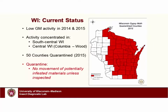What's the current status in the state? Gypsy moth activity has been pretty low the last two years in 2014–2015. This is a current quarantine map — most of the activity in the past few years has been in south-central Wisconsin, places like Walworth County, Rock County, and Dane County. There have also been a few reports scattered from about Columbia County up toward Wood County. Currently, 15 counties are quarantined for gypsy moth, meaning you can't ship firewood, logs, or Christmas trees from quarantine counties to non-quarantine counties unless they've been inspected and confirmed gypsy moth free.